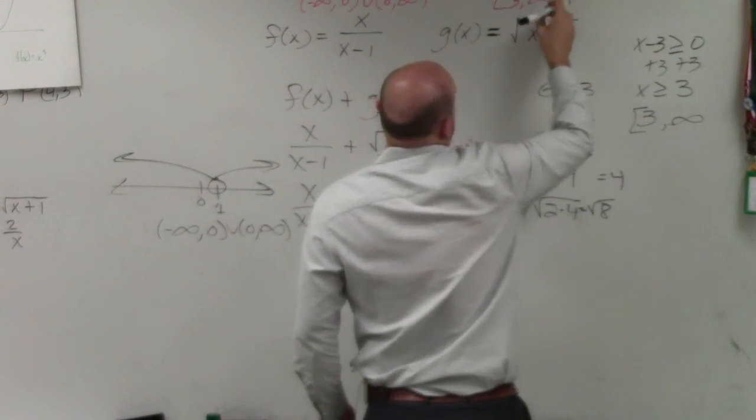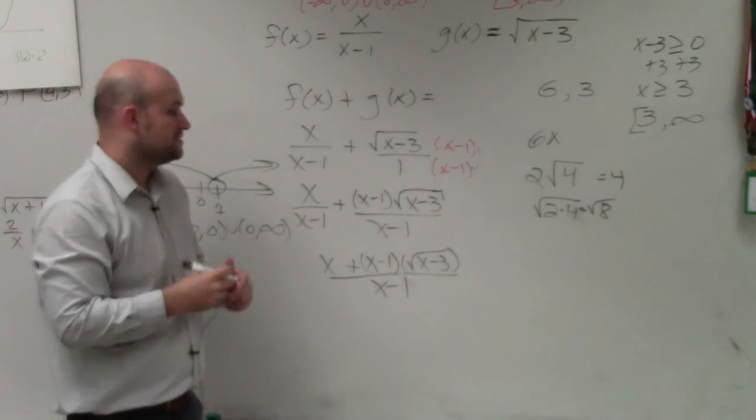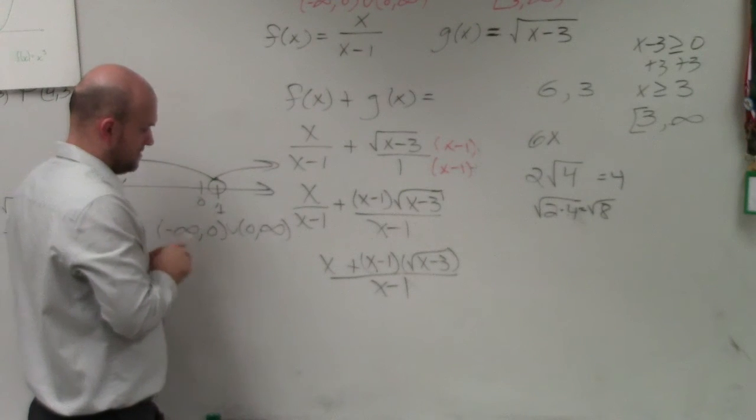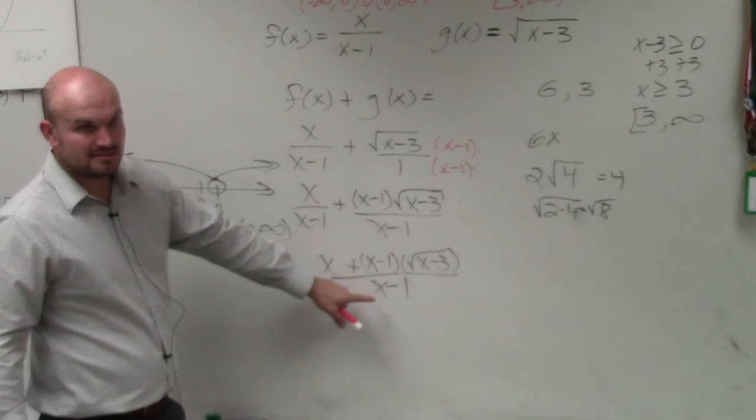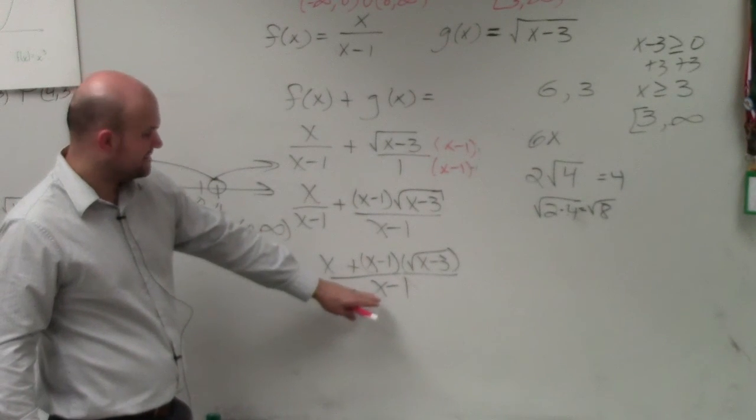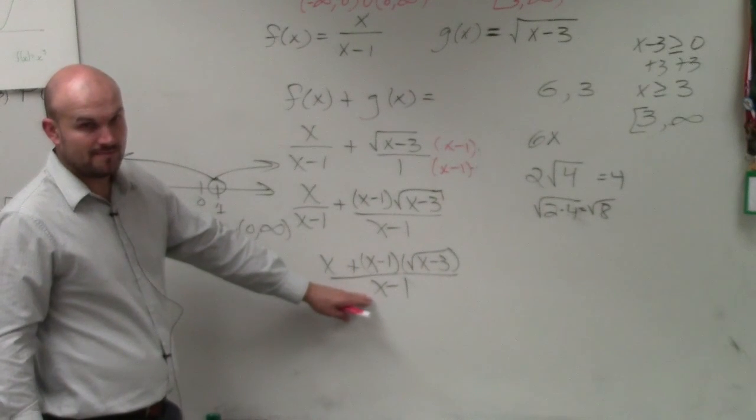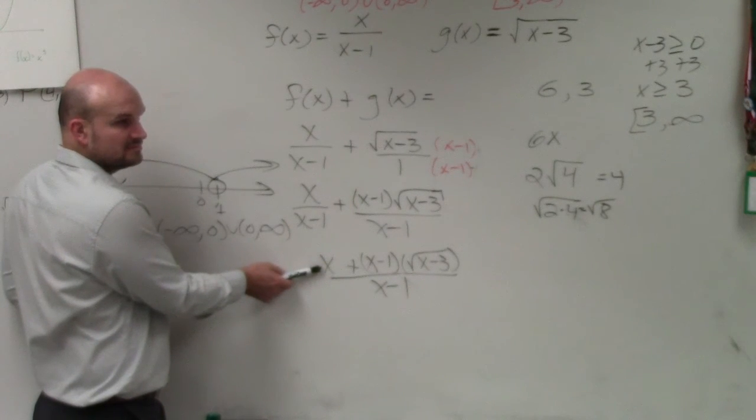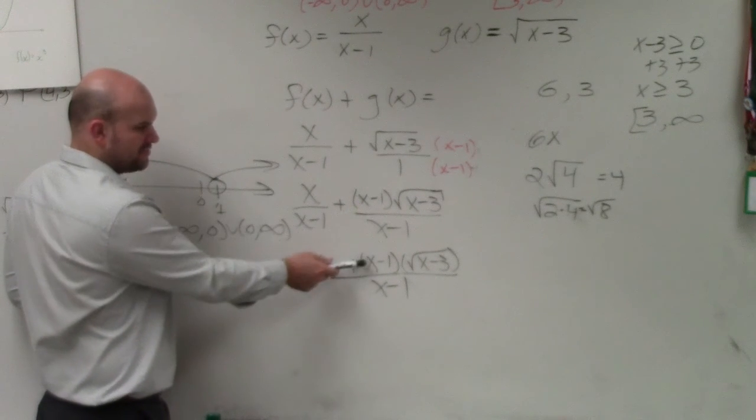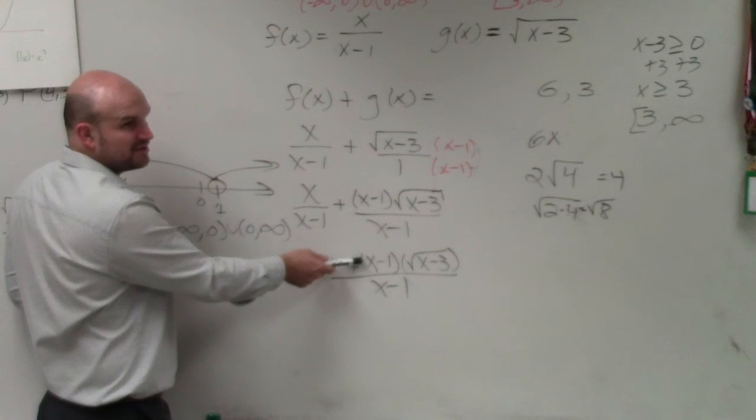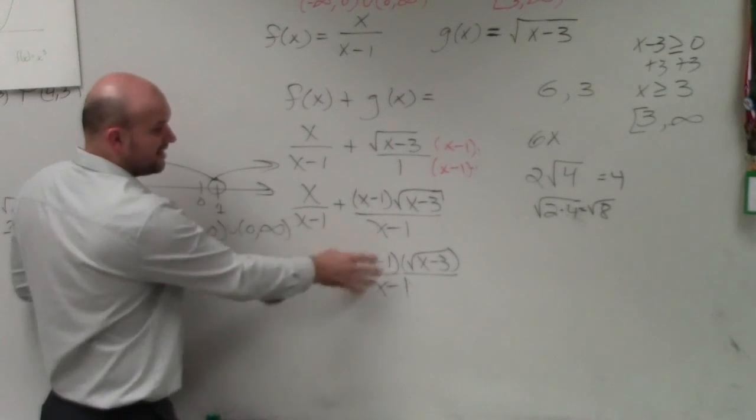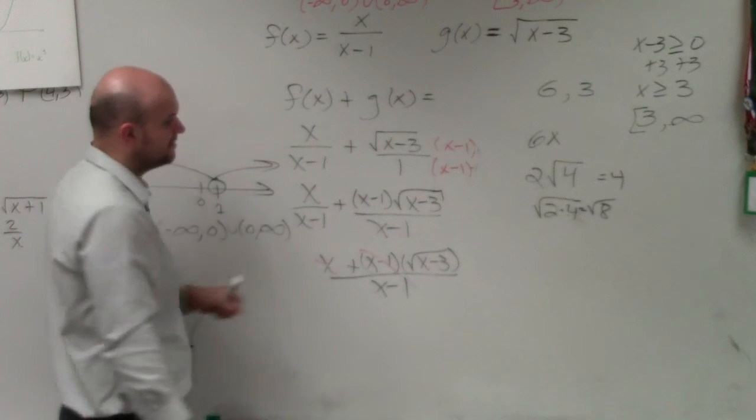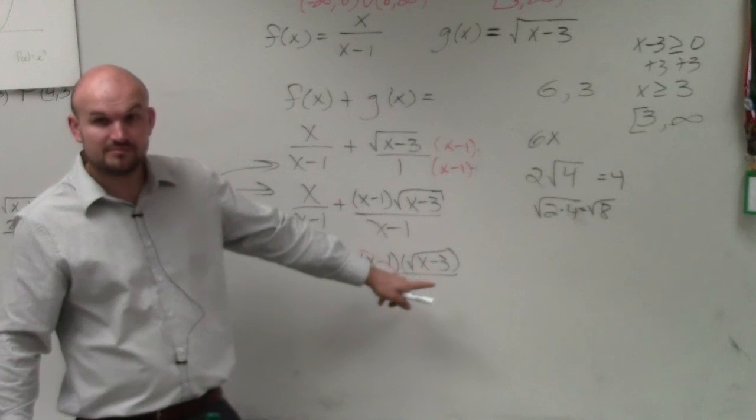All right. So now I've found the two domains written up there. So let's go and take a look at this here. This domain says it can be any number except for 1, right? Is there any domain restrictions on x in the numerator? No. Is there any domain restrictions on x minus 1 in the numerator? No. So guess what? We don't even really care. Again, this is your answer. But if I was finding the domain, that doesn't matter. That doesn't matter.